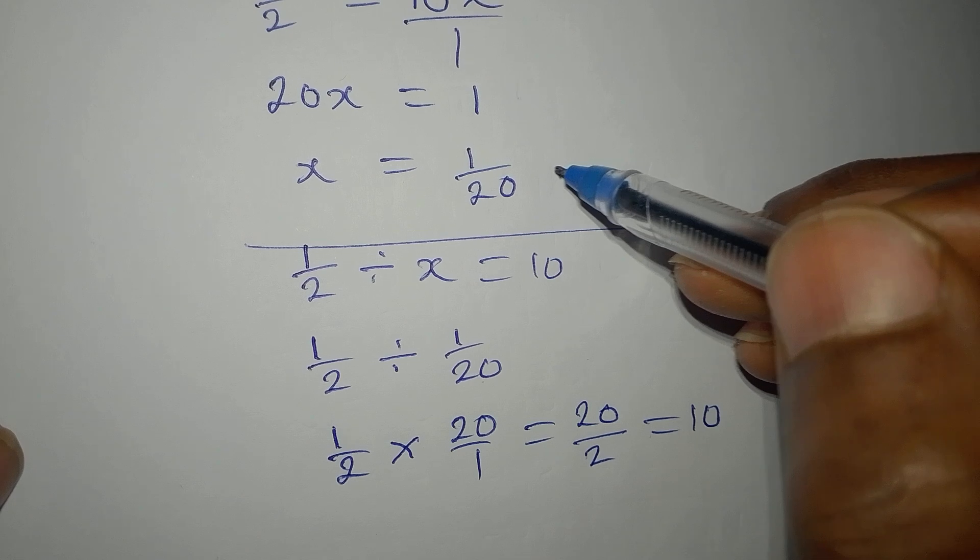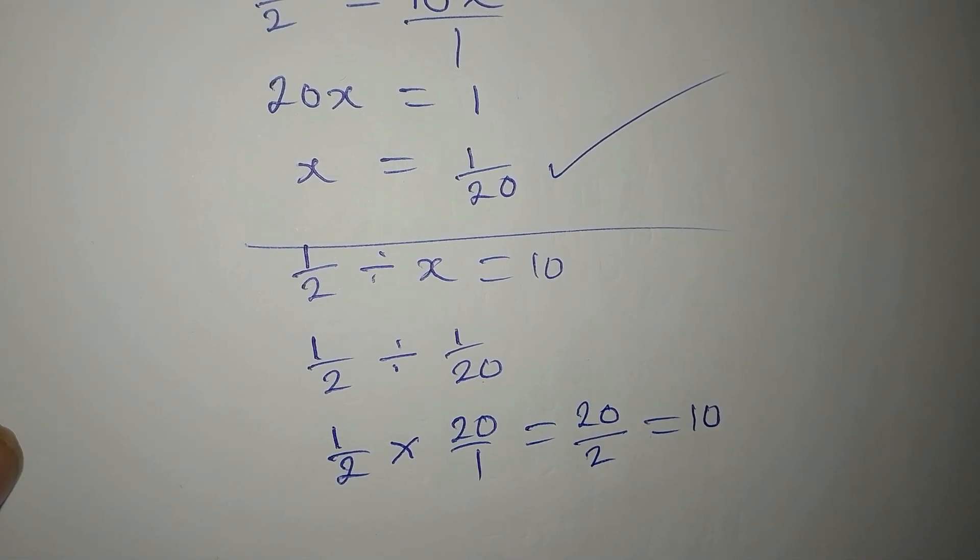So this means that x equals one over twenty is very correct.